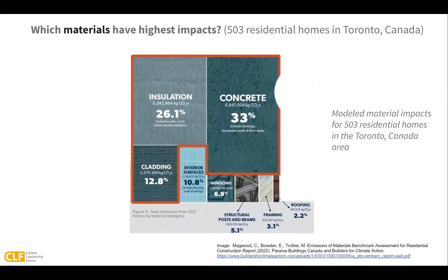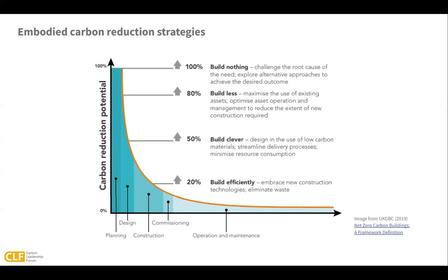Now that we've established why embodied carbon is important and which materials contribute to impacts the most, let's talk briefly about embodied carbon reduction strategies. Starting at the top, we should ask ourselves: do we need to build at all? Next, we should utilize existing buildings to meet our needs. If we do need to build new, how can we build smaller to conserve both materials and energy? Next is building clever, or material optimization. Finally, build efficiently, eliminate waste during construction, and recover waste at the end of a building's life. There are embodied carbon reduction opportunities at every point in a project, and owners, designers, engineers, contractors, and building occupants and maintenance workers all have a role to play.